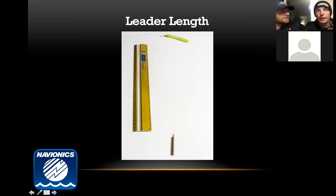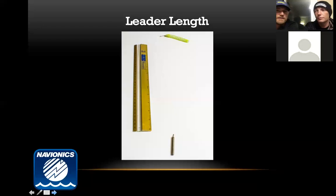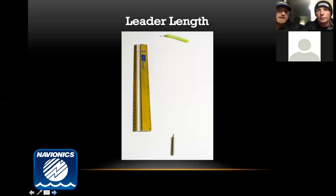Leader length is a big one with a lot of questions about it. It all depends on what you're doing and what mood the fish are in. If they're jumping all over something you can go with a shorter leader, but sometimes you need to let it sit for a long time and a longer leader helps with that. Generally when I'm bed fishing I go with a pretty short leader — just want to get down there and maintain control. The longer your leader, the less actual control you have over your bait.